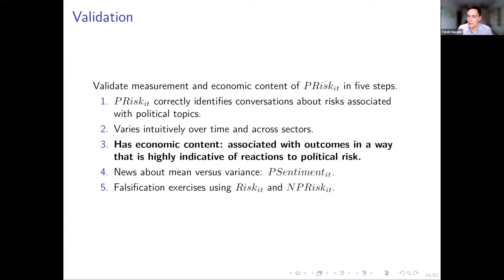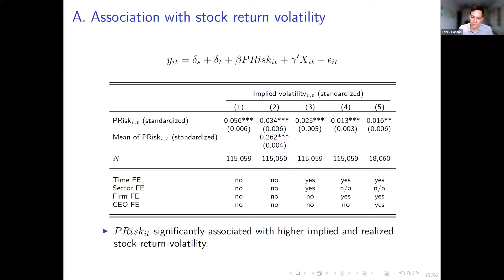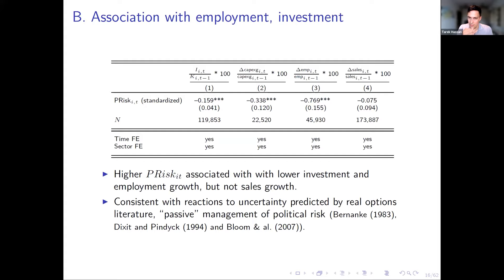The second validation checks whether these risk measures are associated with firm-level outcomes that should also be associated with risk. A strong intuition is that any firm-level risk should show up in higher stock market volatility. Firms with higher political risk indeed have higher stock market volatility, even conditional on firm or CEO fixed effects — meaning at times when the firm faces higher political risk, it also has higher stock market volatility.